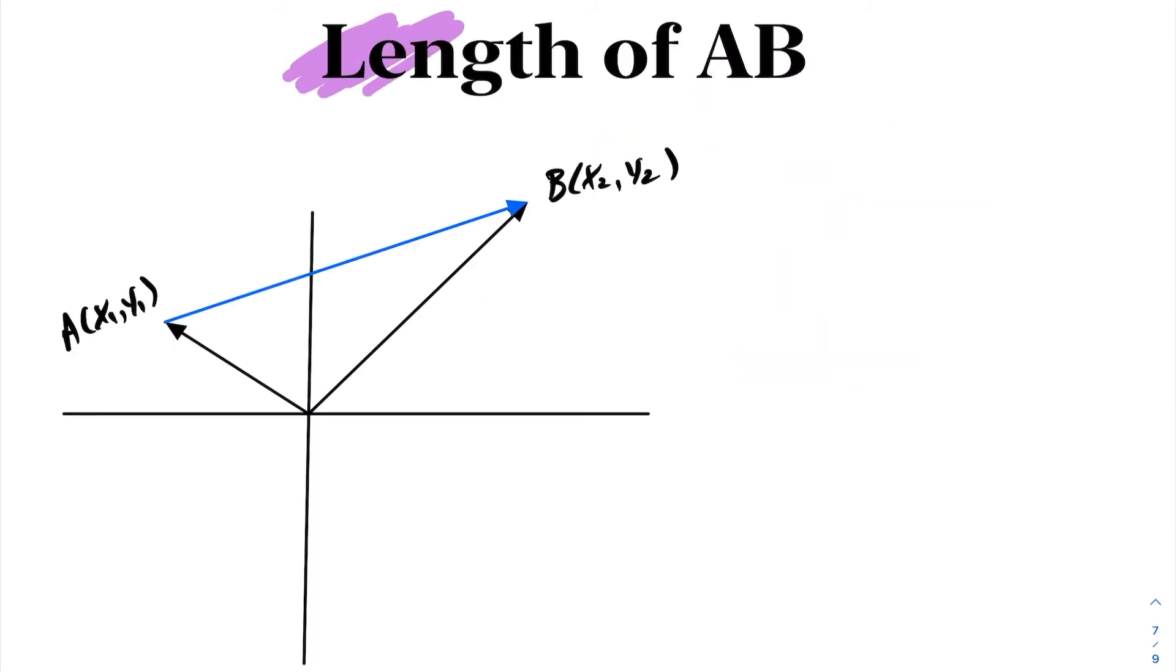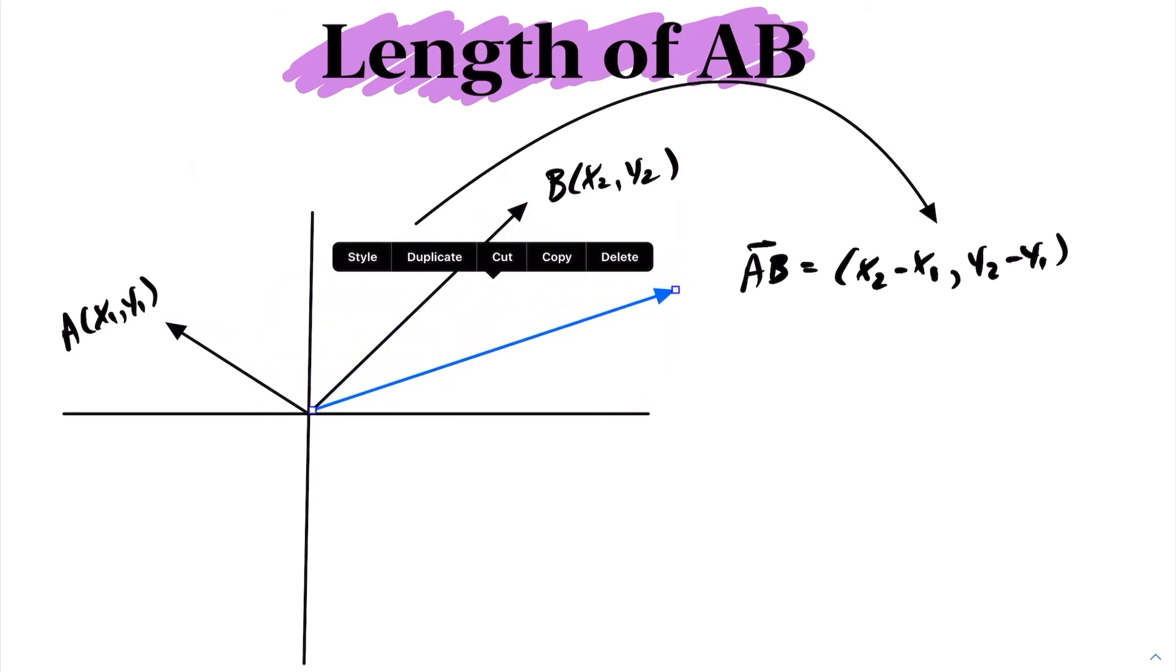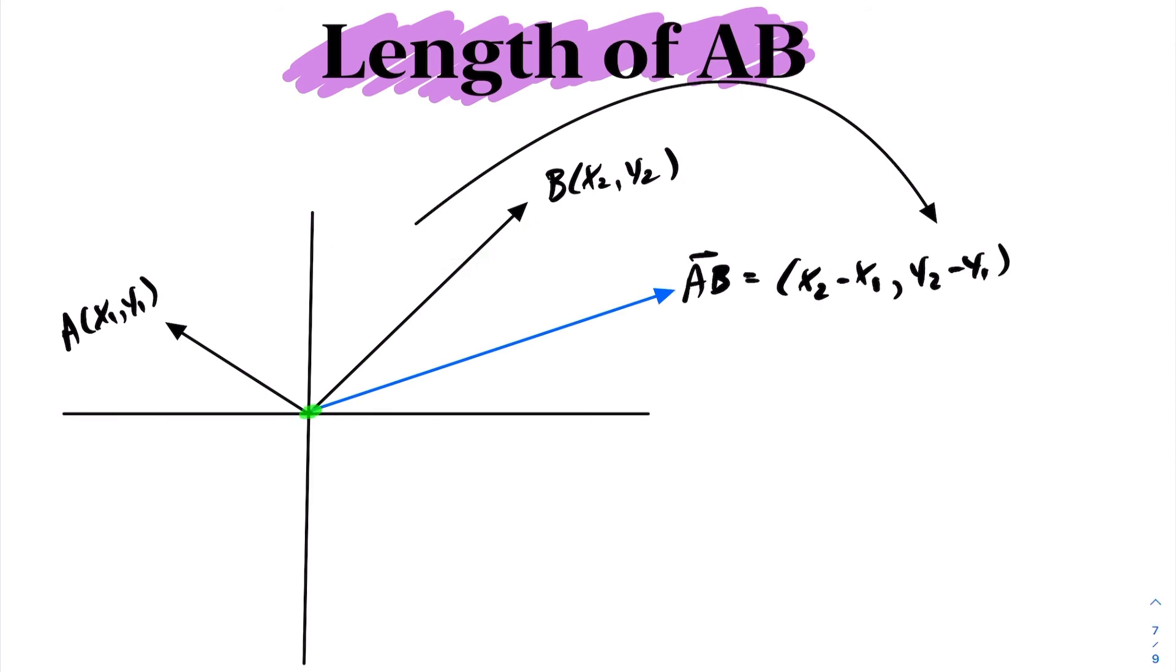We can also calculate the length of a vector using components. Going back to our previous example, suppose I have a vector A at (x1,y1) and vector B from the origin to point B at (x2,y2). We know that vector AB equals (x2-x1, y2-y1) in component form. Vectors have no position, so we can move it back to the origin, in which case the length of this vector would go from the origin to point (x2-x1, y2-y1). We have a right angle, this would be the length of (x2-x1) squared, and this would be (y2-y1) squared. Therefore, the magnitude of AB equals the square root of (x2-x1)² plus (y2-y1)².